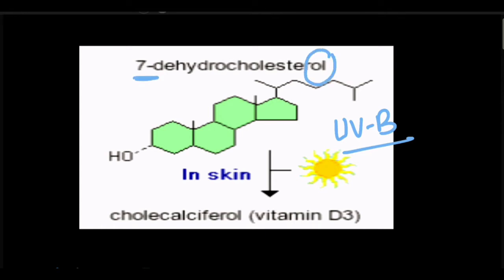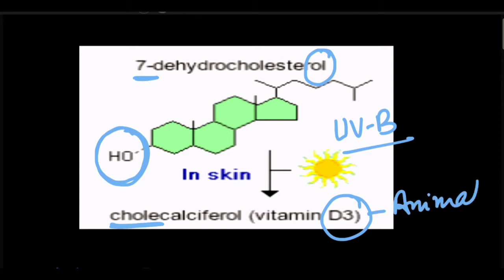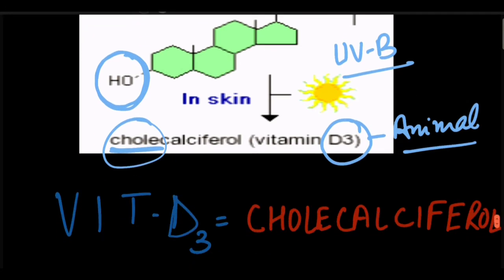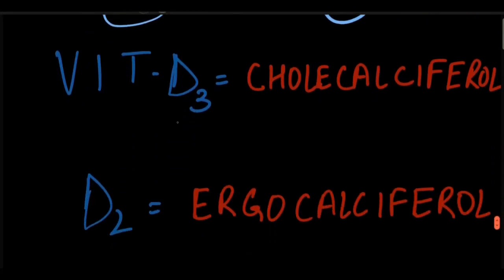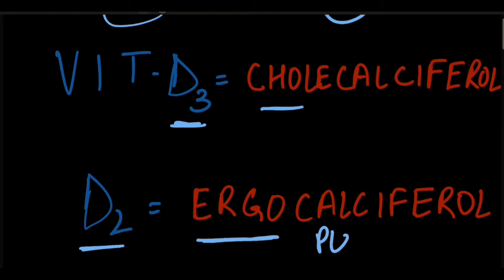7-dehydrocholesterol already has a hydroxyl group attached to the chain, which gets converted into cholecalciferol. Cholecalciferol, or Vitamin D3, is the animal-origin Vitamin D. D2, which stands for ergocalciferol, is the plant-based Vitamin D.